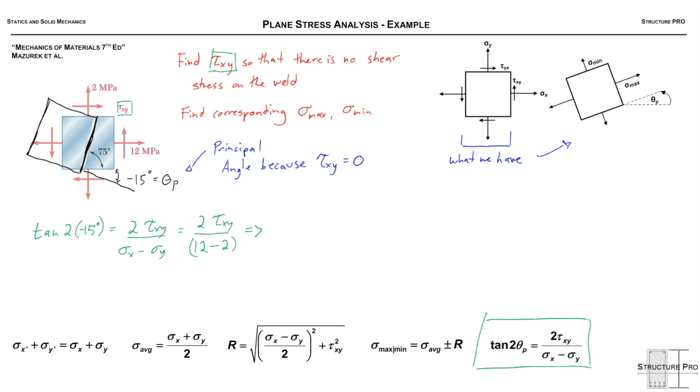So 2τ_xy over 10. Solving this, we get tan(-30) times 10 over 2, which equals negative 2.89 MPa. That is the answer to the first part. Surprisingly simple—we just needed to know which angle to take.